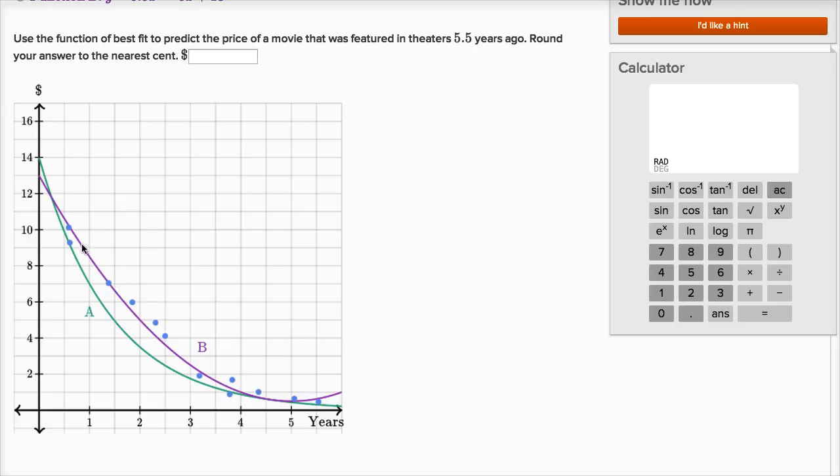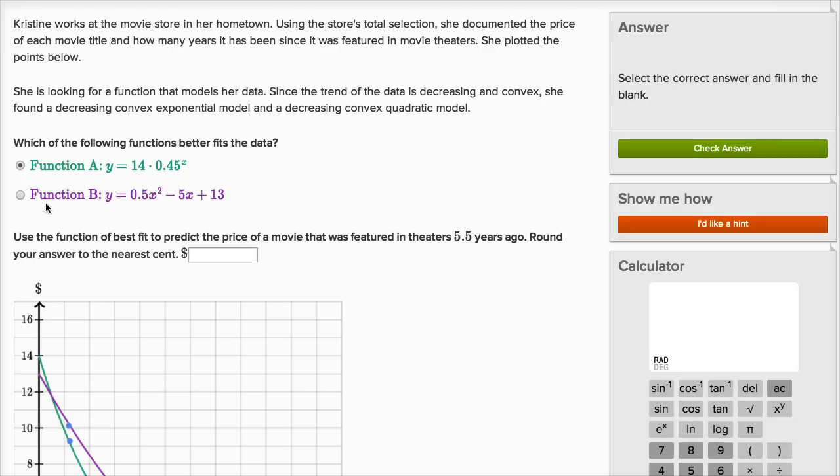The purple model, or the purple function right over here, it has more of a balance between overestimating right over here, it's overestimating by a little bit, and underestimating. And its underestimates are closer, and its overestimates are closer, than this green model. So I would say that function B is definitely a better model.